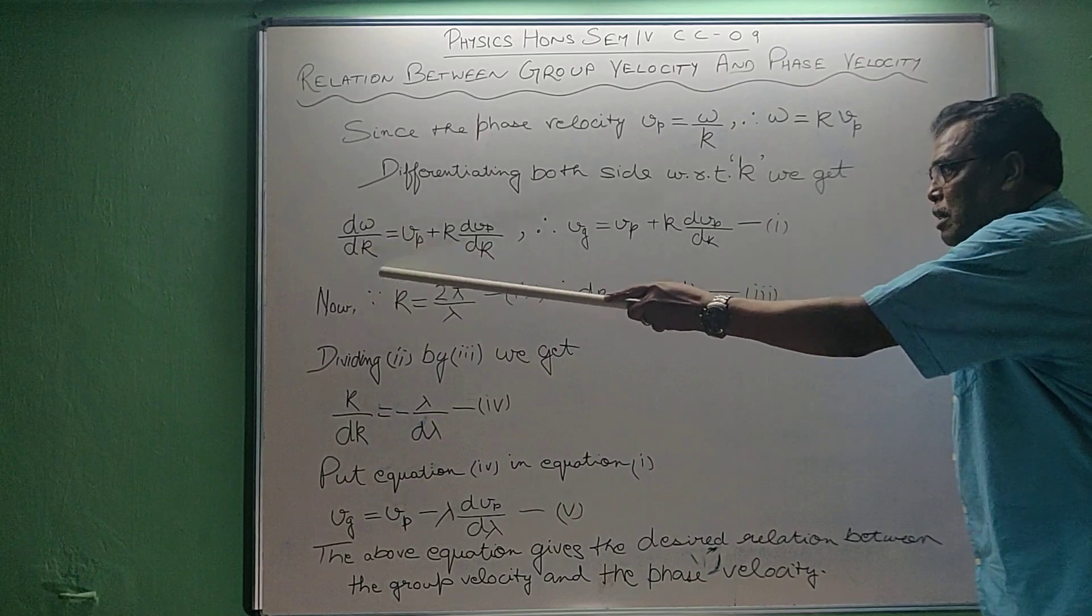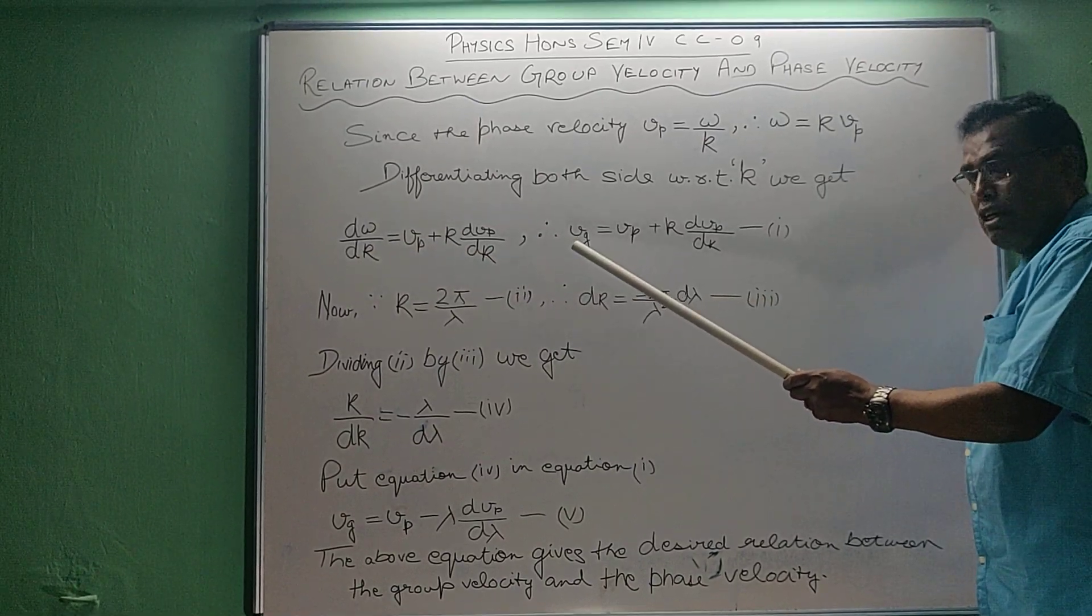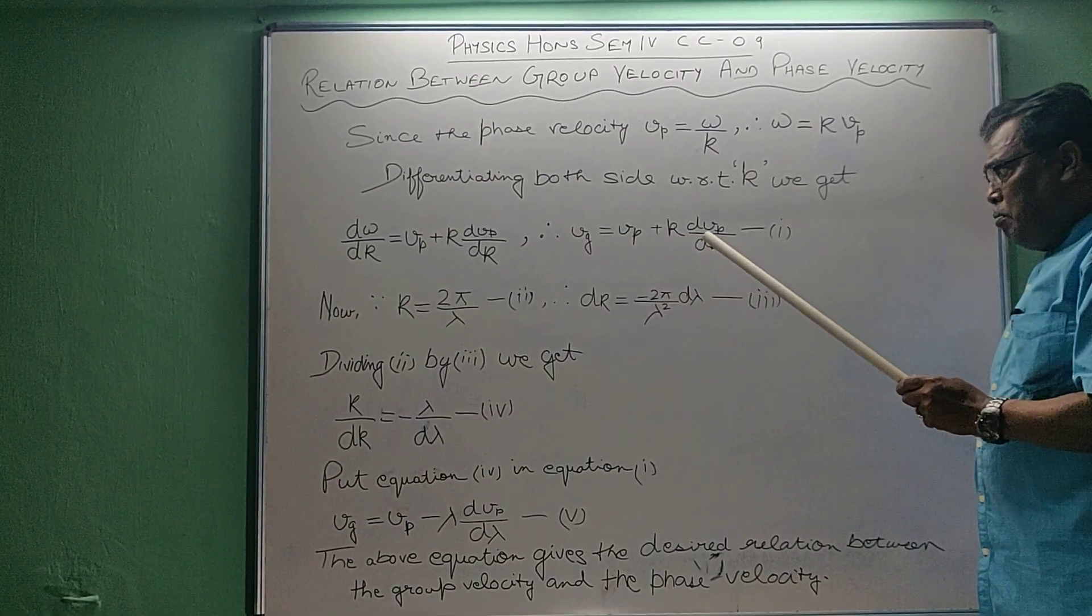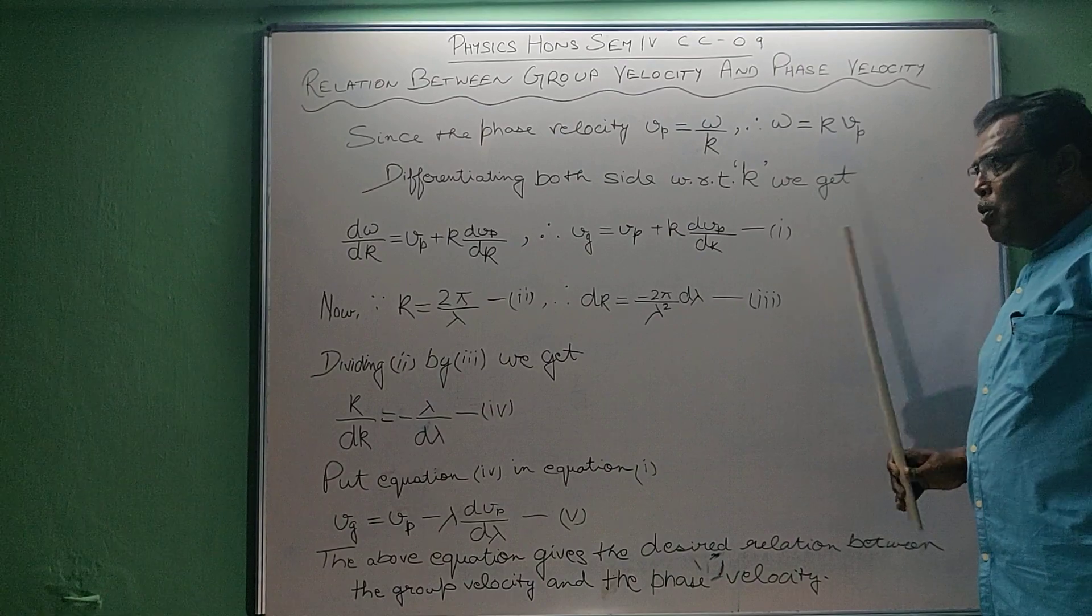And d omega by dk is equal to vg. That is group velocity. So it becomes vp plus k dvp by dk. Let it be equation number 1.